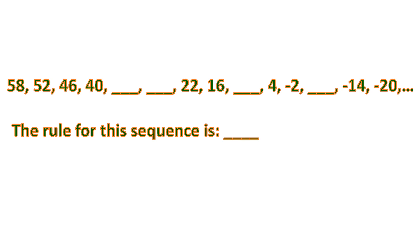We confirm it with the next pair: 52 minus 46 is also minus 6. And 46 minus 40 is also 6, so the rule is minus 6. Now we fill in the blanks: 40 minus 6 is 34, then 34 minus 6 is 28. Then 16 minus 6 is 10, and negative 2 minus 6 is negative 8. Those are the blanks filled in.